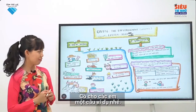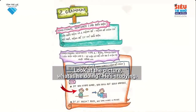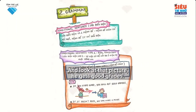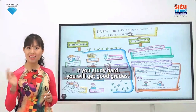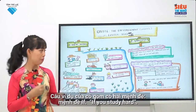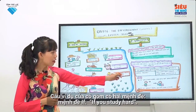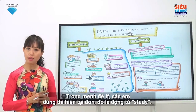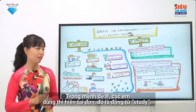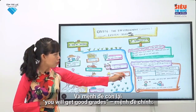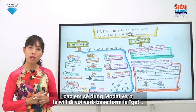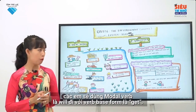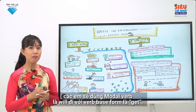I will give you an example. Look at the picture — what is he doing? He's studying. And look at that picture — he gets good grades. If you study hard, you will get good grades. My example sentence includes two clauses. The if clause is 'if you study hard' — you use present simple, which is the verb 'study'. The main clause is 'you will get good grades' — you use a modal verb, 'will', going with the verb base form 'get'.